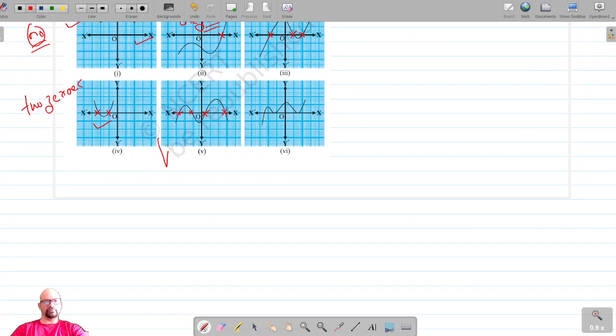So for this polynomial there are four zeros. In the sixth case, the graph of the polynomial intersects the x-axis at one, two, and three points, so this polynomial has three zeros.